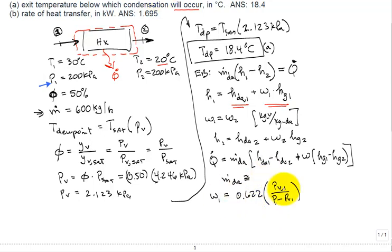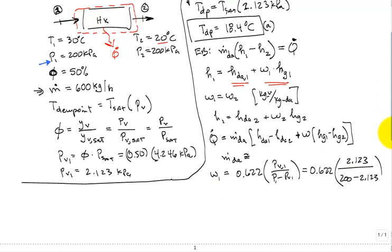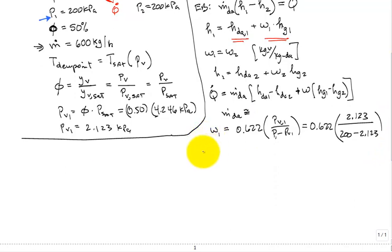I know some of this information and we calculated some of it already. So this is 0.622 times 2.123 kPa divided by 200 minus 2.123 kPa. And so we'll just continue on. Omega 1 is equal to, the humidity ratio is equal to 0.00667. That's a small number.